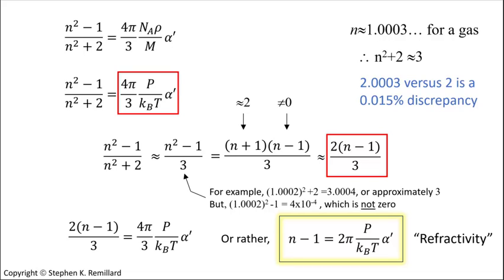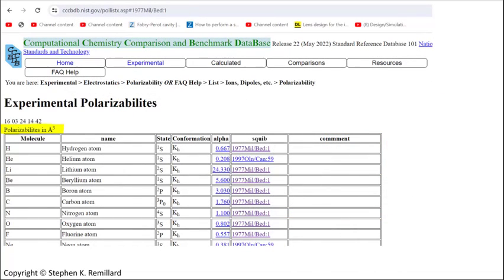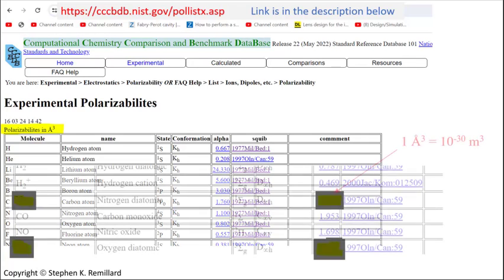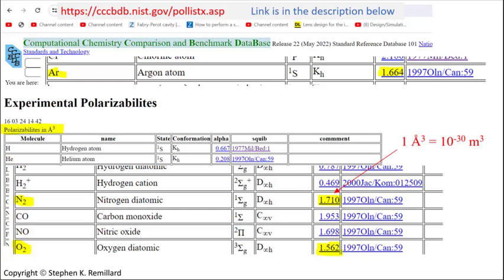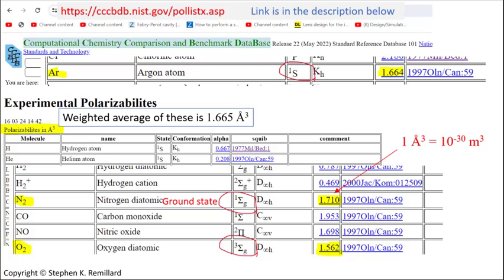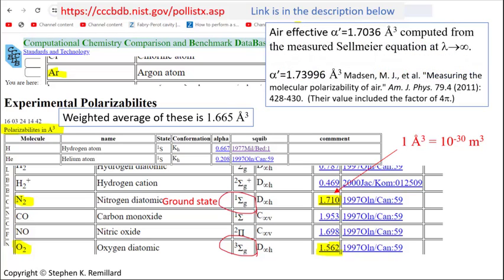One last detail is how do you get the volume polarizability alpha prime? You could back it out of the measured refractive index, but polarizabilities have been deduced through a variety of experimental methods and are tabulated on the NIST website. So the polarizabilities of the ground states of the three main components of air are tabulated here. Most air molecules are in the electronic ground state, unless they've been excited by maybe a cosmic ray. And dry air is a mixture of these, and it should have an effective polarizability that's a weighted average of them. But that turns out to be 2% lower than the value that I backed out of the measured Sellmeier equation, and 4% lower than the value published here in this MJ-Phys paper.